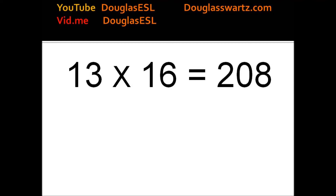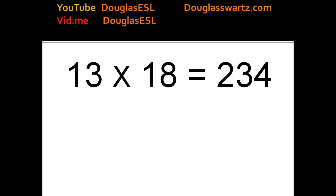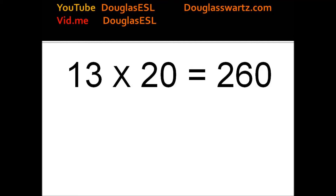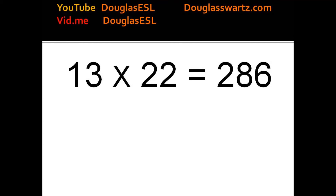13 times 16 equals 208. 13 times 17 equals 221. 13 times 18 equals 234. 13 times 19 equals 247. 13 times 21 equals 273. 13 times 22 equals 286. 13 times 23 equals 299.